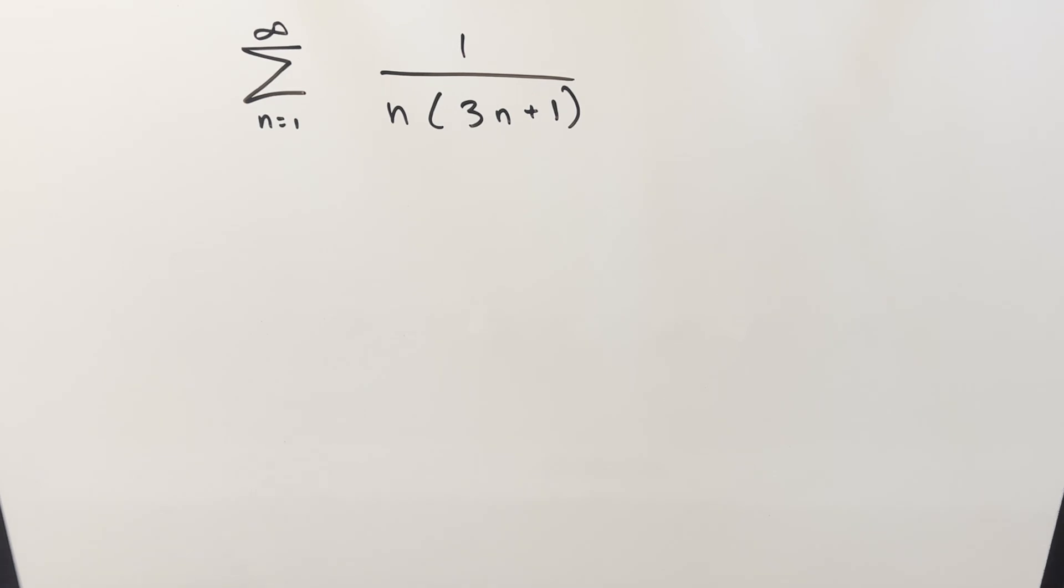We have the sum from 1 to infinity of 1 over n times 3n plus 1. I know a few different ways to do this, and in this video I want to use the digamma function on it.